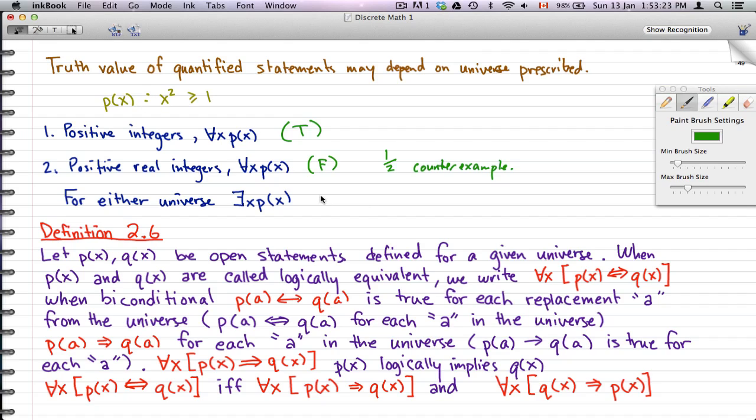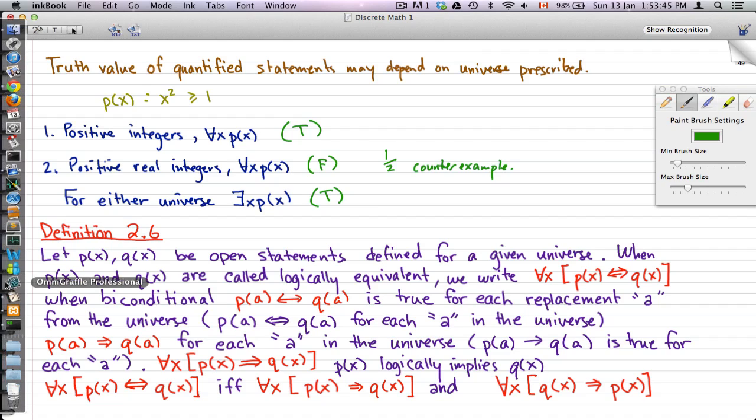Positive real integers, this is false if we use for example half, that is a counter example. And if you just square half, it won't be greater than 1. So if we just use that here, so 0.5 times 0.5, it will give you 0.25 which is not greater than 1. So that will give us false, a perfect counter example. For either universe, exists x Px, there exists some x such that x squared is greater than or equal to 1. Now that is true because this statement 2 is pretty much inclusive of statement 1. So if there exists some integer for statement 1, then of course for either universe there would exist some x such that makes the statement true.